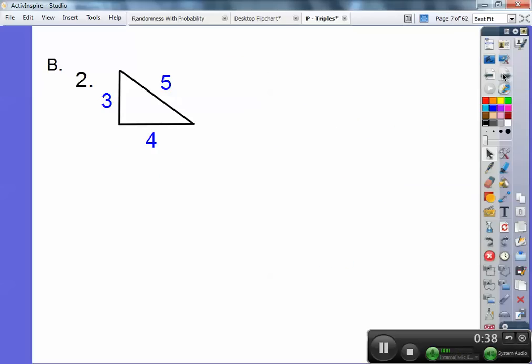Okay, so try this one, 3, 4, 5. Is 3 squared plus 4 squared equal to 5 squared? So you get 9 plus 16, and yeah, that ends up being 25, so it is a right triangle.